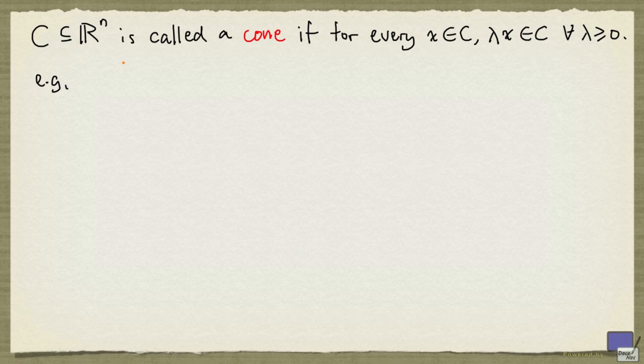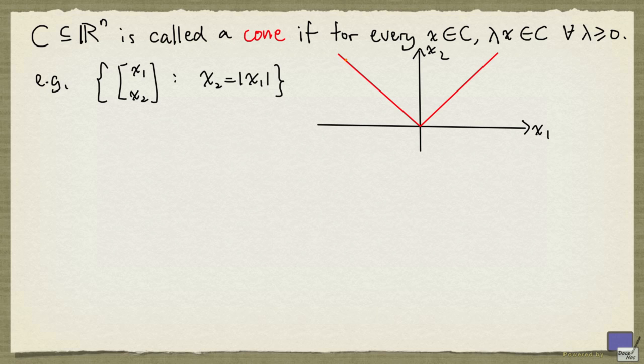For example, the following set is a cone. We can see this by looking at a sketch of the set. The set is given in red in this sketch. If we pick an element here, then all non-negative scalar multiples of this element would lie along this ray. And if we pick an element here, then all non-negative scalar multiples would lie on this ray. So this is a cone.